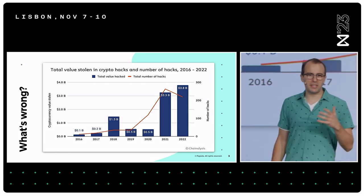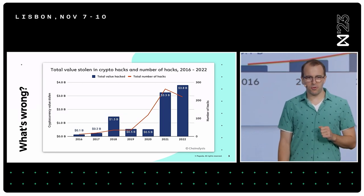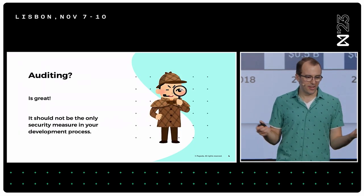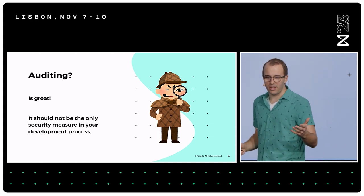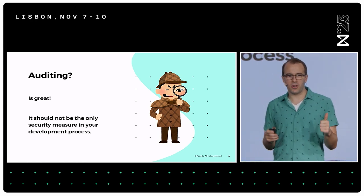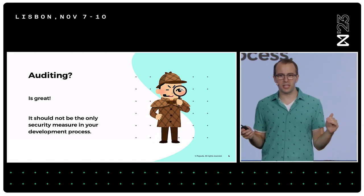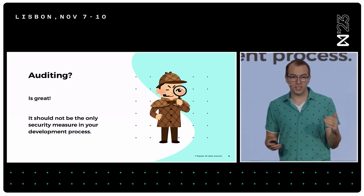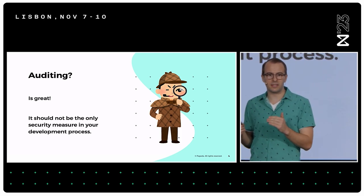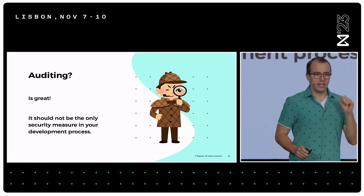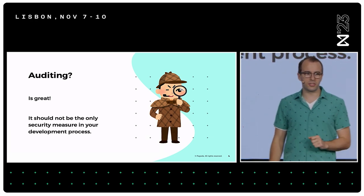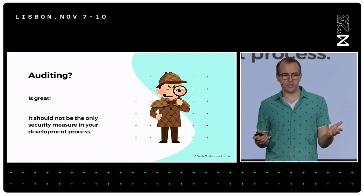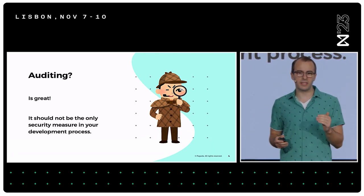So what could a potential solution to this problem look like? One of the first things that might jump into your head is auditing, and that's a good thing — auditing is great. But auditing should not be the only security measure you have in your development process. It's really great as a last step, that final third-party check saying, yes, this looks secure. But it shouldn't be the first step in your security process, and it definitely shouldn't be the only step.